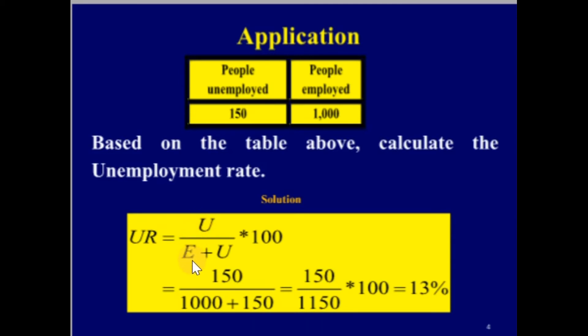Substituting the values: UR equals 150 divided by 1,000 plus 150, which equals 150 divided by 1,150.